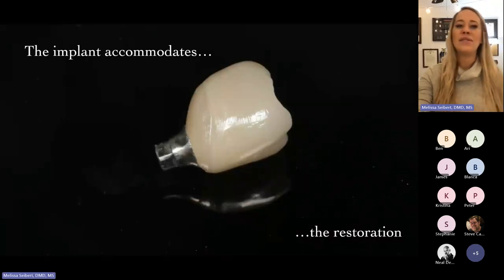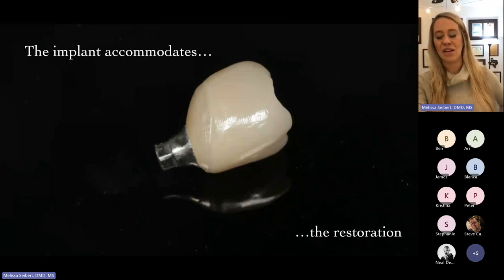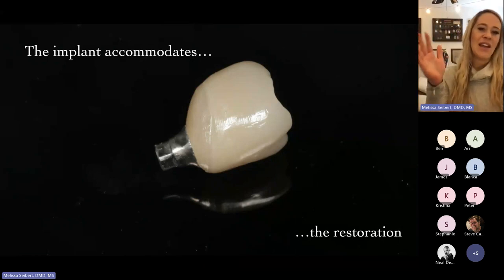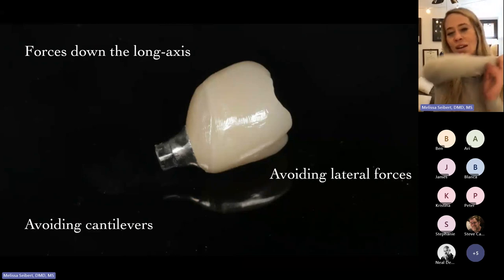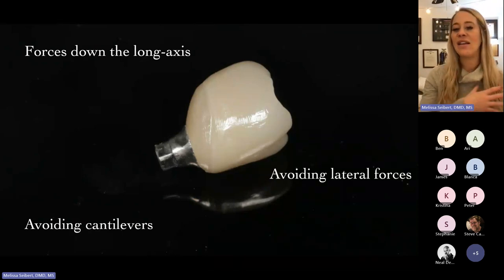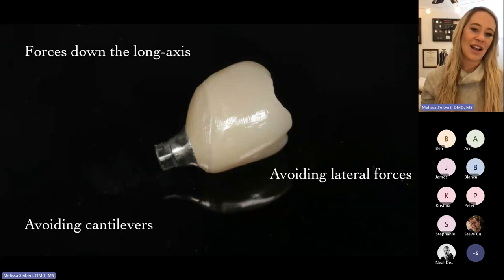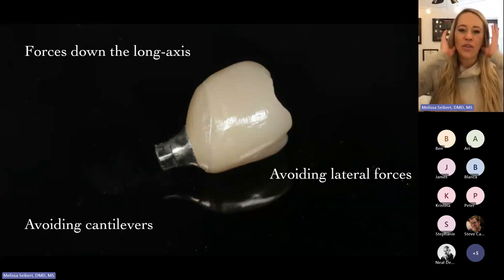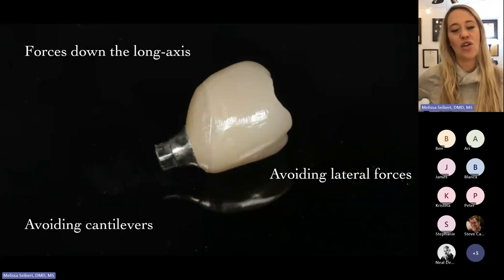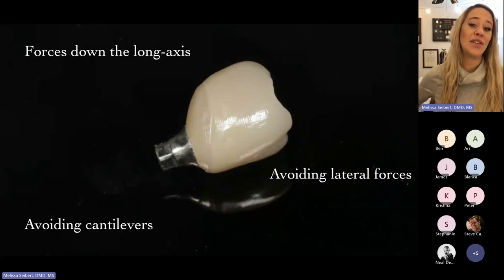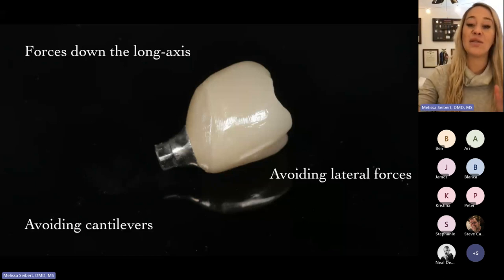What do I mean by the implant being restoratively driven? We want the implant to accommodate the restoration. We design where the implant crown — the final restoration — should be in space, and then our implant placement follows suit. Ideally, we want the forces down the long axis of the implant, avoid lateral forces which can put stress on the prosthesis and potentially break the screw, and avoid excessive cantilevers when possible. We have to consider not only surgical considerations, but also the restorative considerations.